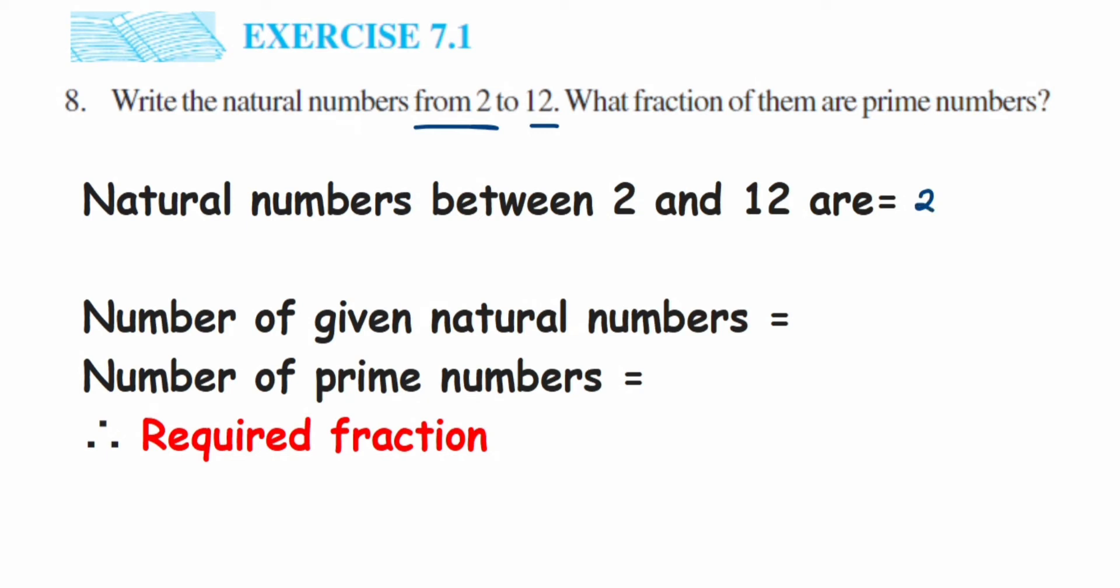The natural numbers will be 2, 3, 4, 5, 6, 7, 8, 9, 10, 11, and 12. Let us count how many natural numbers are there. If we count them, we'll get 1, 2, 3, 4, 5, 6, 7, 8, 9, 10, 11.